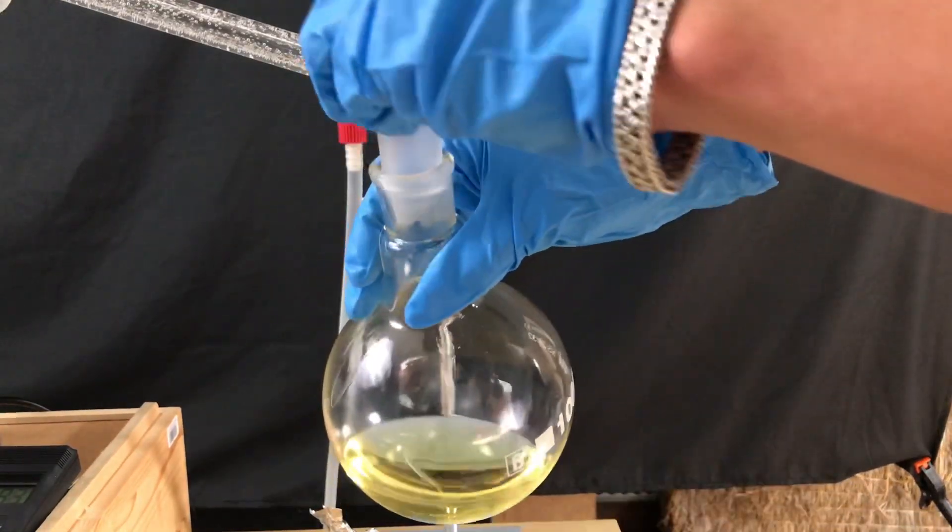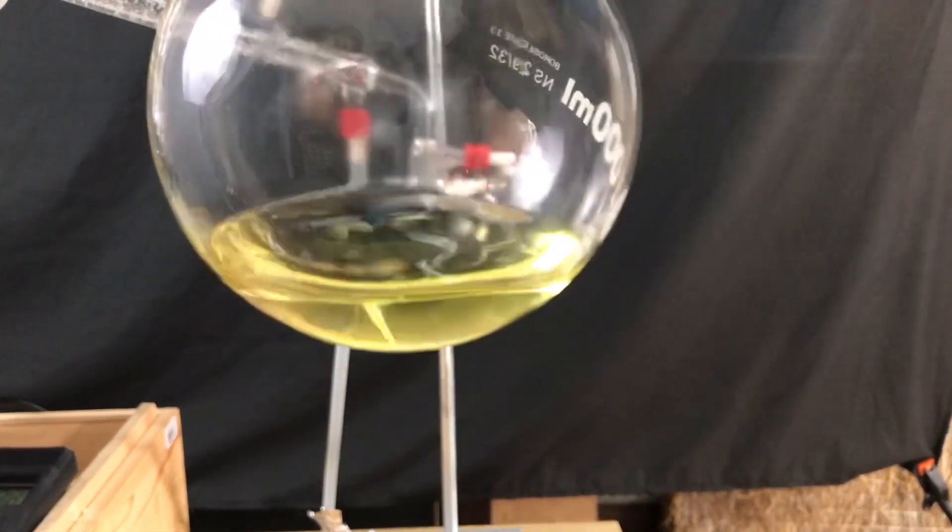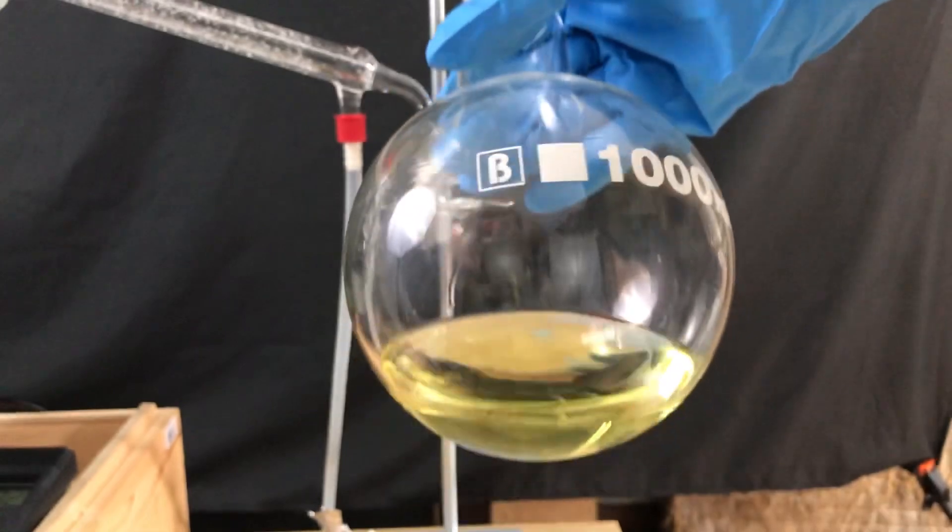Flask was removed and stoppered. You can see that this 1,4-dioxane is yellow and this is due to some contaminants.